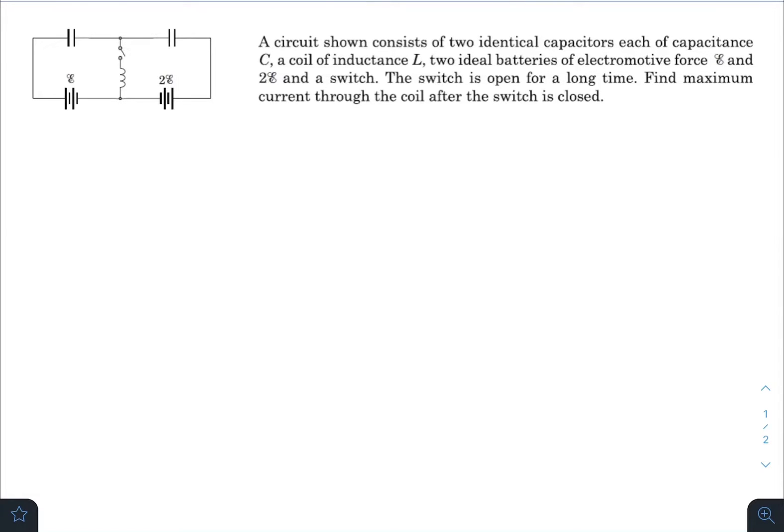What is up everyone, I hope all of you are doing great. In today's question we have a circuit shown that consists of two identical capacitors, each of capacitance C, a coil of inductance L, two ideal batteries of electromotive force ε and 2ε, and a switch. The switch is open for a long time. Find maximum current through the coil after the switch is closed.